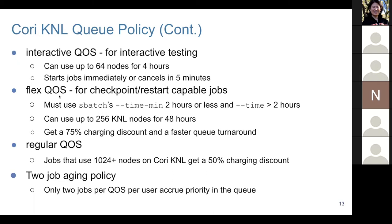The flex QoS is for checkpoint-restart capable jobs and has some requirements. You must specify a minimum time of two hours and the maximum time must be larger than two hours. You can use up to 256 KNL nodes for 48 hours, and the great thing is it has a 75% charging discount. For regular QoS, if you use more than 124 KNL nodes, you can get a 50% large job charging discount.